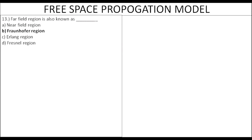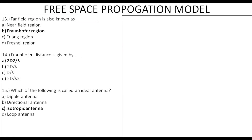Next, the far-field region. The distance is 2D²/λ. The radiation pattern will change shape in this region. The e-field is orthogonal. The ideal reference antenna is the isotropic antenna.